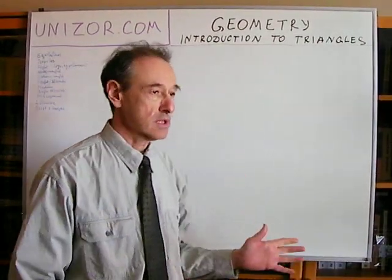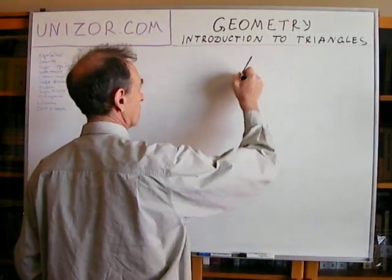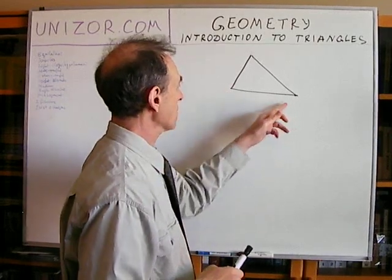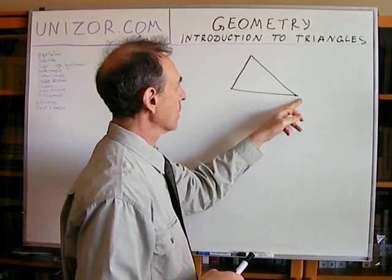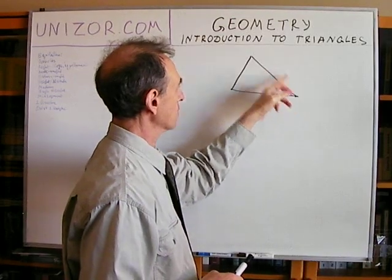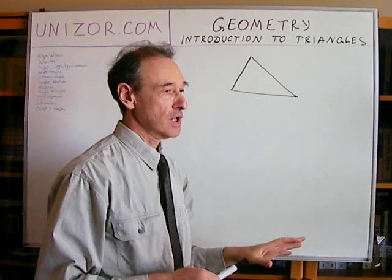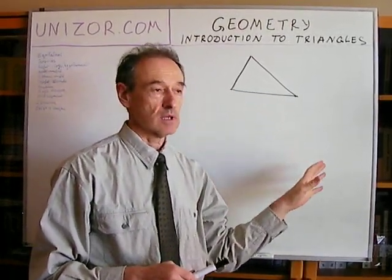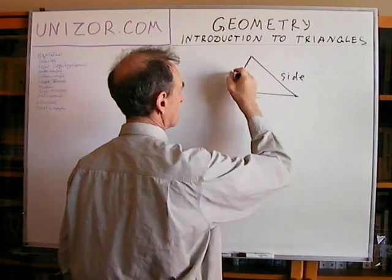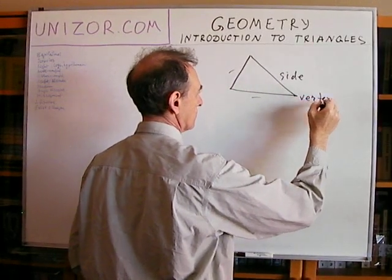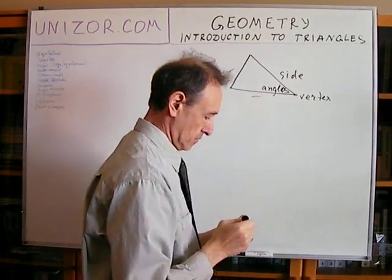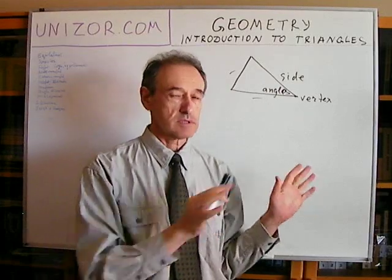So what is a triangle? It's a geometrical object which contains three different segments, and they are connected in such a way that the beginning of each segment corresponds to the end of the previous segment, so we have three vertices and three segments or sides of triangle. These are sides, and this is a vertex. These are angles. That's the definition of triangle.